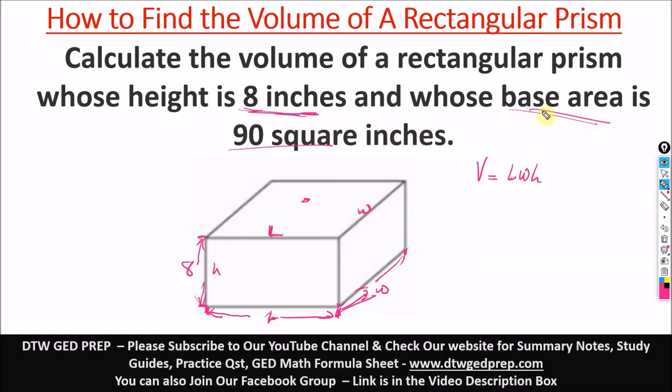The base of a rectangular prism has a length and a width. From here, they've told us that the height H is 8. But what is L and W? From our question, they said the base area is 90 square inches. The base area means L×W equals 90. L×W equals 90 because L×W will give us the base area.